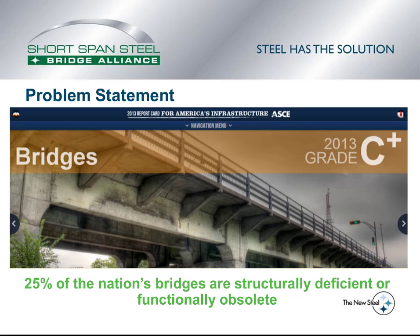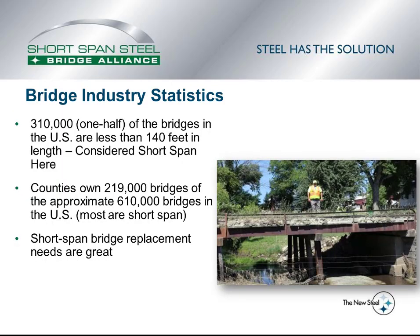The ASCE 2013 Report Card for America's Infrastructure states that 25% of the nation's bridges are structurally deficient or functionally obsolete. Looking at bridge industry statistics, over 300,000 — or half — of the bridges in the United States are less than 140 feet in length, which is what the Shortspan Steel Bridge Alliance considers a short span bridge. Counties own over 200,000 of the 600,000 bridges in the United States, and most of these county bridges are 140 feet or less and thus defined as short span.